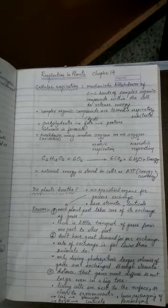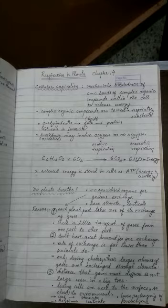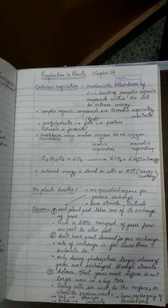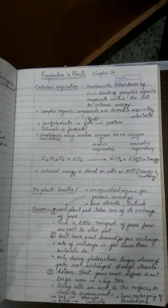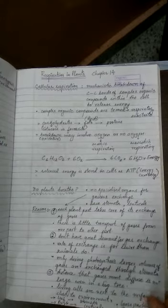We learned that there is not much great demand for exchange of gases except at the time of photosynthesis, and the distance that gases need to diffuse is also not very much, even in the case of a big tree. That's why we learned that there are no specialized organs present in the case of plants for exchange of gases.